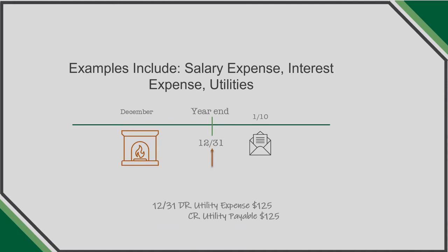This is reflected on December 31st by recording a debit to utility expense and a credit to utility payable. Then, if you pay the bill — let's say on January 15th — you debit the utility payable to get rid of it and credit cash. This ensures timely recognition of costs in the time period to which they relate.